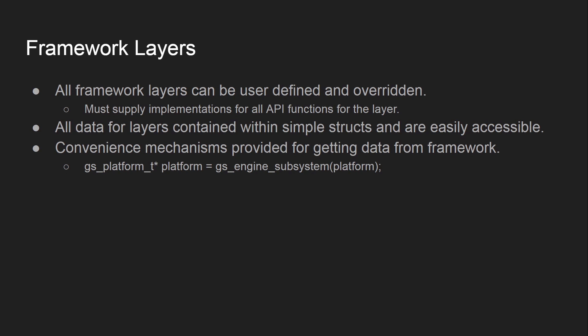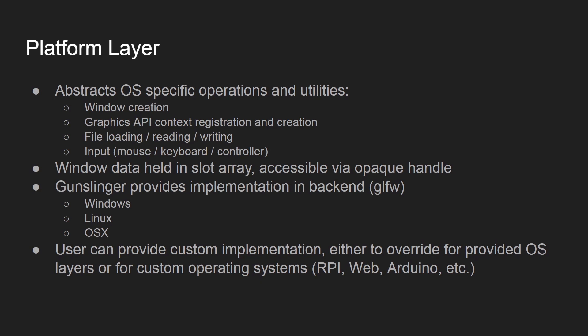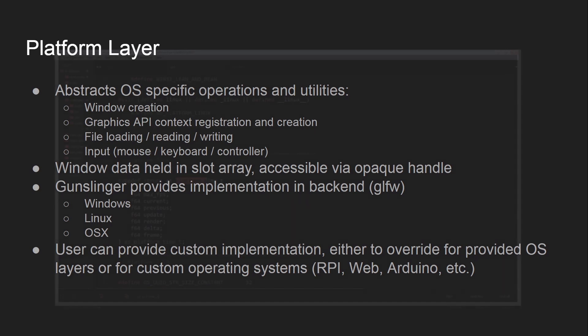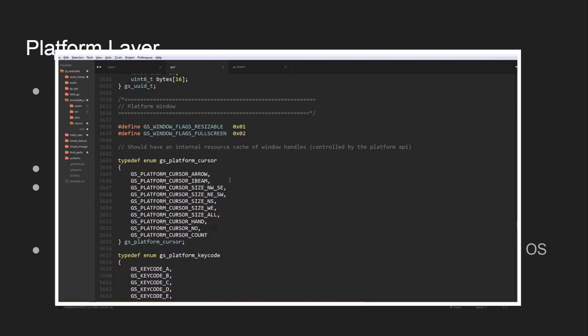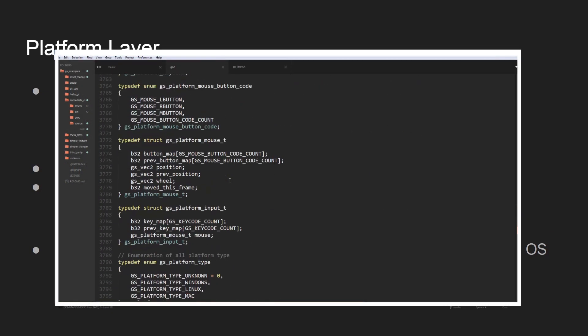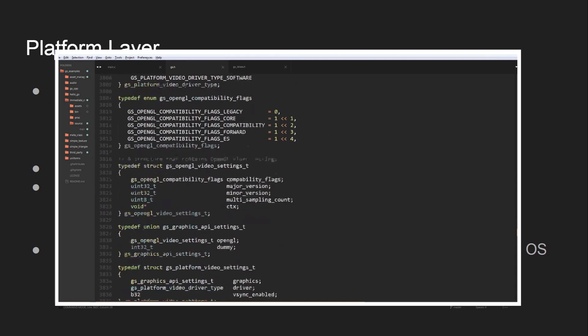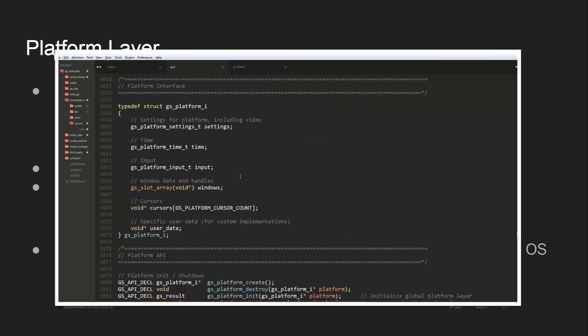At its core, Gunslinger is made up of framework layers. Every single one of these layers can be user-defined and overwritten — the user must supply implementations for all the API functions for each layer. All the data for each layer is contained within simple structs and is easily accessible. There are convenience mechanisms for getting data from the framework, such as the gs_engine_subsystem macro to get a pointer to a given layer, like the platform layer.